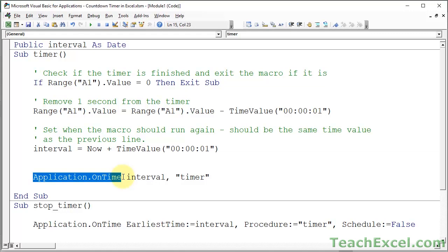So we tell it what time we want it to do something. I want you to do it at the interval right here. I want you to do it at the current time plus one second. So one second into the future. Run it then. What do I want you to run? I want you to run the timer macro. That's all.